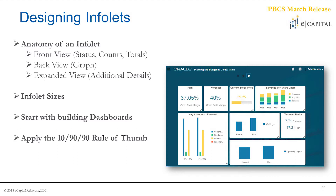Another thing I liked in the documentation was the 10-90-90 rule of thumb around the overall design of your infolet. Oracle has some good benchmarks here: infolets should provide quick status of certain metrics to give you actual decisions. Think about the top 10 percent of use cases for data visualization. Then apply the 90-90: of that top 10 percent, consider situations where 90 percent of the user community would be asking these questions 90 percent of the time. If the criteria meet all three conditions, it's probably a good candidate for an infolet.